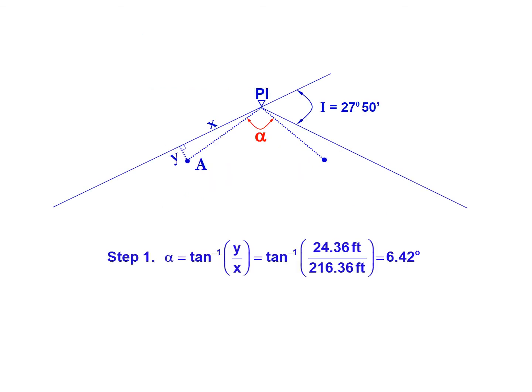The first step is to determine the angle alpha. Alpha equals the inverse tangent of Y divided by X. Taking the inverse tangent of 24.36 feet divided by 216.36 feet gives us an alpha of 6.42 degrees.